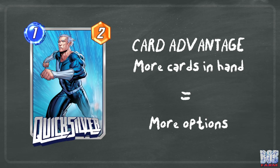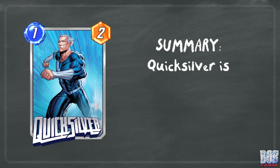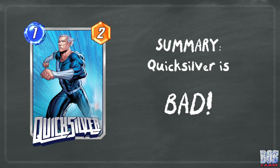More cards in hand also increases your perceived range by the opponent, giving them more potential cards to play around. The more information present face up on the board, the more information you give your opponent. In summary, Quicksilver is bad. This is my opinion, but the math and theory points towards this conclusion. This may have been how most players felt already, but hopefully the data explains this conclusion further.